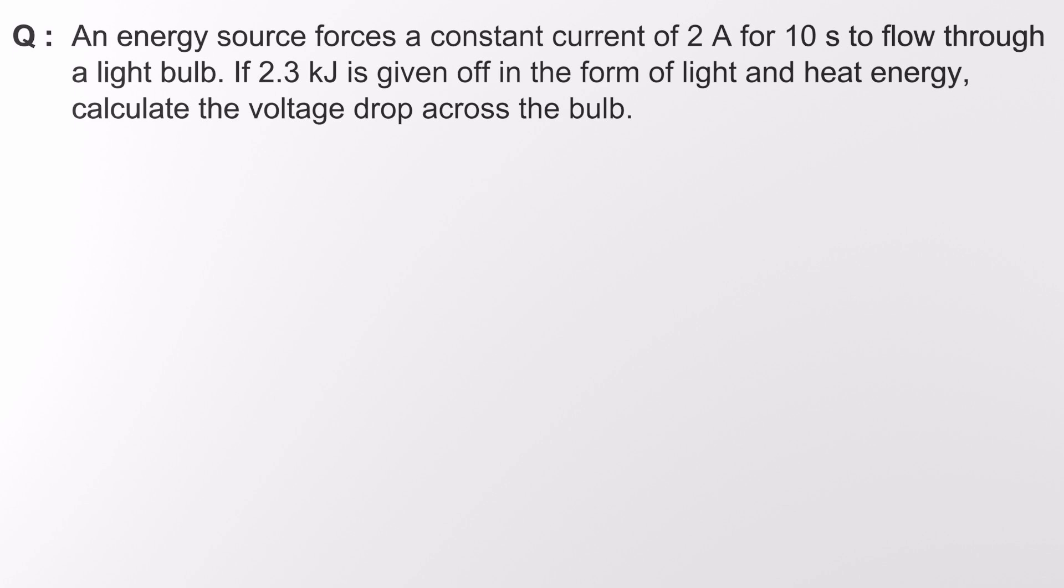An energy source forces a constant current of 2 amperes for 10 seconds to flow through a light bulb. If 2.3 kilojoules is given off in the form of light and heat energy, calculate the voltage drop across the bulb.